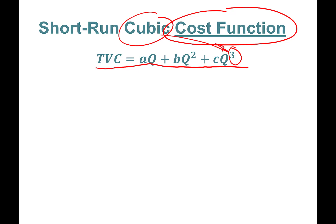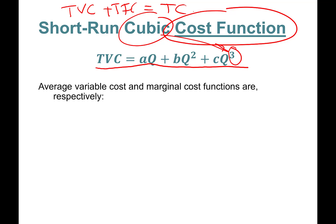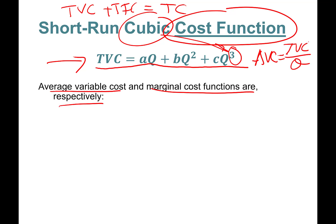In the short run, remember we have total variable cost, total fixed cost, and that makes total cost of production. Average variable cost and marginal cost are to be calculated from this. Average variable cost is total variable cost divided by quantity, and short-run marginal cost is the first derivative of total variable cost with respect to quantity.